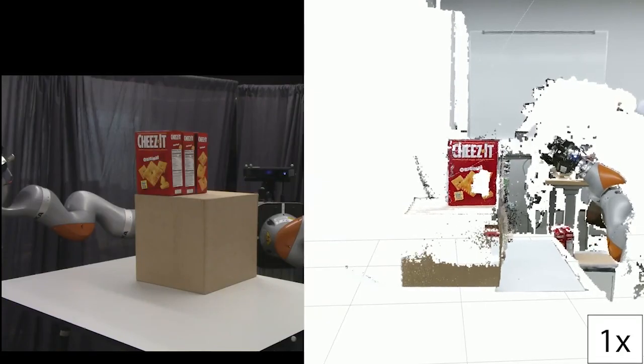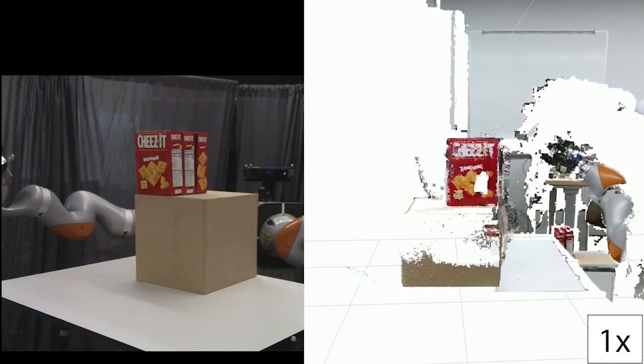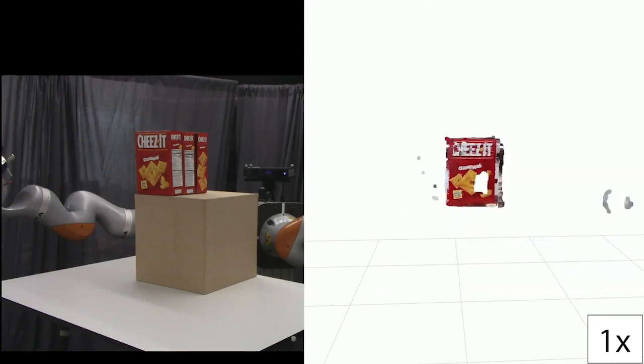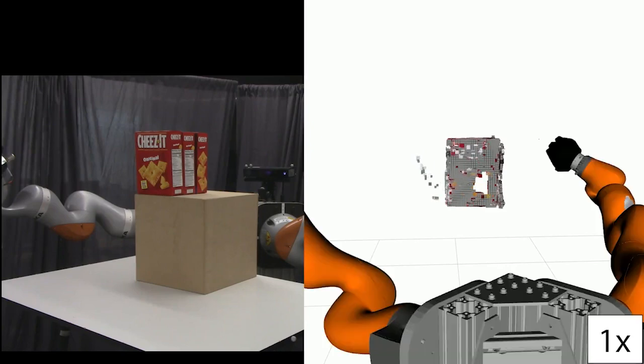To apply this on our physical robot, we first segment the scene into distinct objects. For these live examples, the shape completion network was trained on all YCB objects.